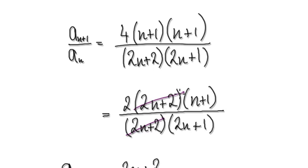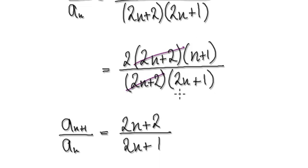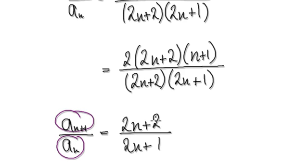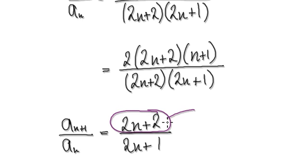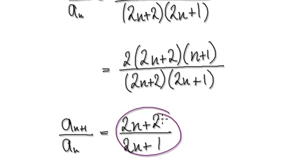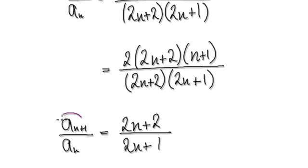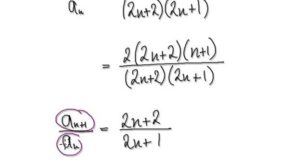This will cancel out with this, giving you this. So if you look at this, the next term divided by the current term is this whole thing here — it is ever so slightly greater than 1, because the numerator will always be bigger than the denominator. So this thing here will always be slightly bigger than 1.